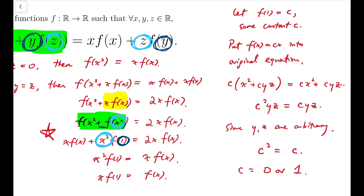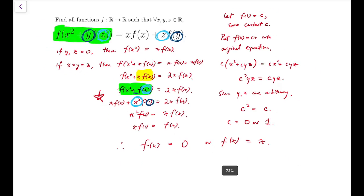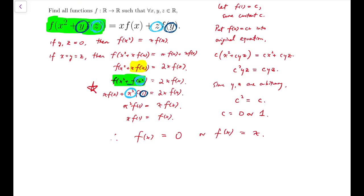c can be 0 or 1. Now that means f of x is either 0 because 0 times x, which is just 0, or f of x equals to x. So these are the two possible solutions, and we check them.